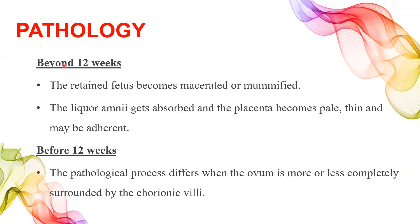Let's go to the pathology. Beyond 12 weeks: the retained fetus becomes macerated or mummified. The liquor amnii gets absorbed and the placenta becomes pale, thin, and may be adherent. Before 12 weeks: the pathological process differs when the ovum is more or less completely surrounded by the chorionic fluid. There is something called a carneous mole — the pathological variant of missed miscarriage affecting the fetus before 12 weeks.